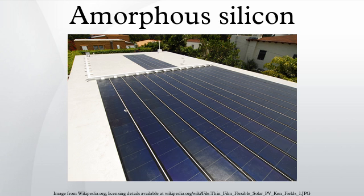Photovoltaic thermal hybrid solar collectors are systems that convert solar radiation into thermal and electrical energy. These systems combine a solar cell, which converts electromagnetic radiation into electricity, with a solar thermal collector, which captures the remaining energy and removes waste heat from the solar PV module. Solar cells suffer from a drop in efficiency with a rise in temperature due to increased resistance. Most such systems can be engineered to carry heat away from the solar cells, thereby cooling the cells and improving their efficiency by lowering resistance.